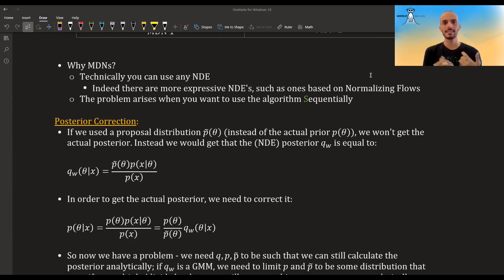Well, what you would get is no longer the true posterior. You would get that the posterior is equal to this using the proposal prior instead of the actual prior. So in order to get back to the true posterior, you have to correct for this.